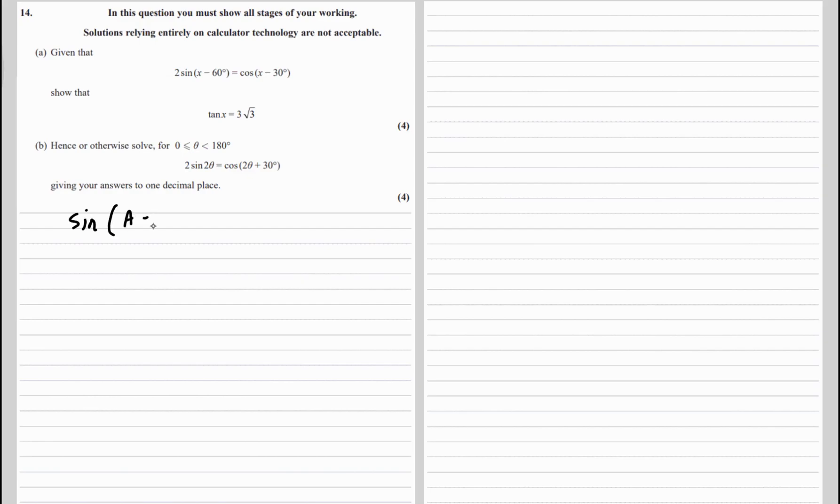So sine a minus b is sine a cos b minus cos a sine b, and cos a minus b is cos a cos b plus sine a sine b.